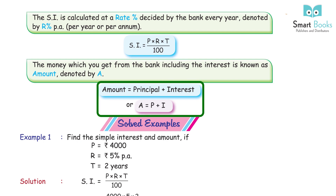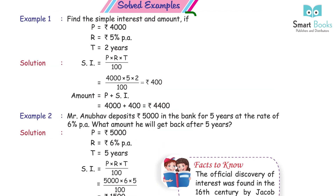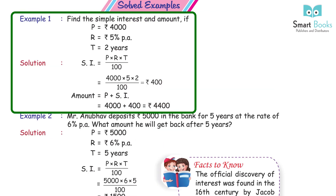Amount equals principal plus interest, or A = P + I. Solved Example 1: Find the simple interest and amount. P = Rs 4,000, R = 5% PA, T = 2 years. Solution: SI = 4000 × 5 × 2 ÷ 100 = Rs 400. Amount = P + SI = 4000 + 400 = Rs 4,400.